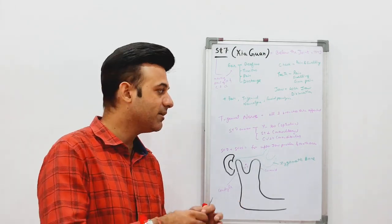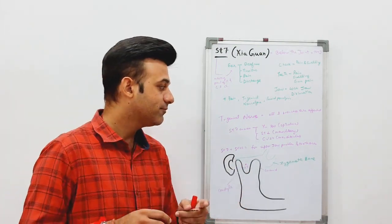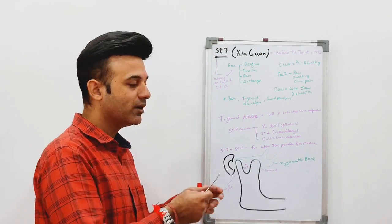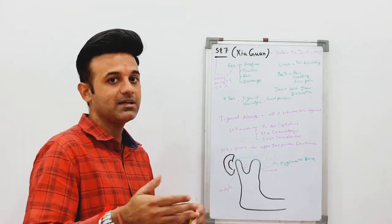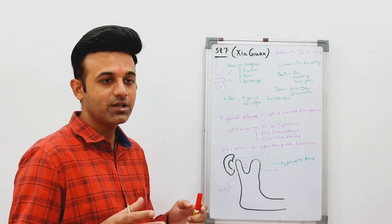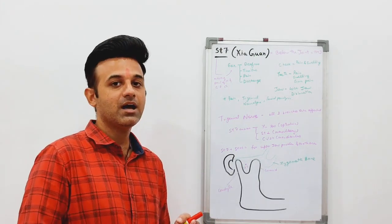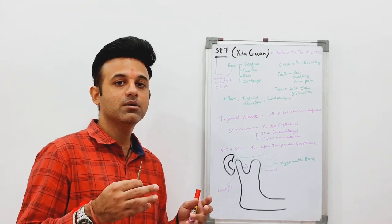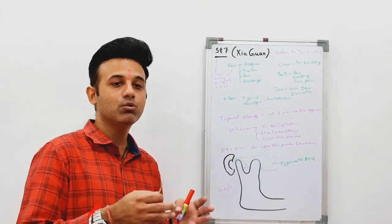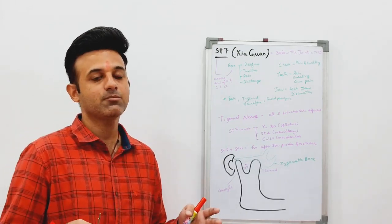For upper jaw tooth problems, just two points are sufficient: Stomach 7 as the local point and Stomach 44 as the distal point. In summary, today we covered Stomach 4, 6, and 7. Stomach 4 is very important for all kinds of problems on the face. Stomach 6 is the point for problems of the lower jaw, and Stomach 7 is the point for problems of the upper jaw. Thank you.